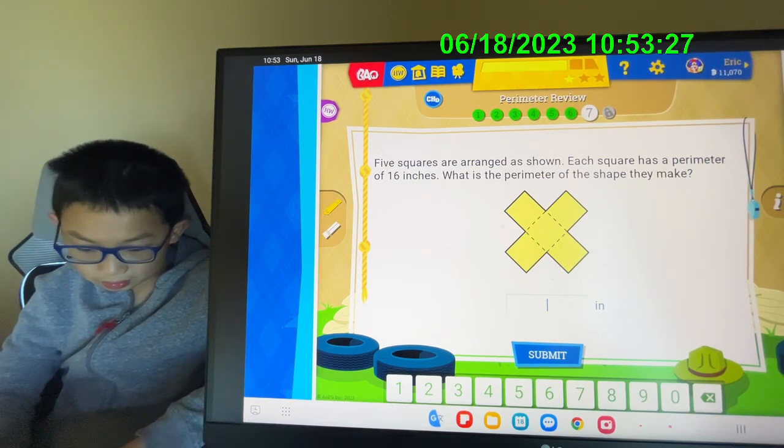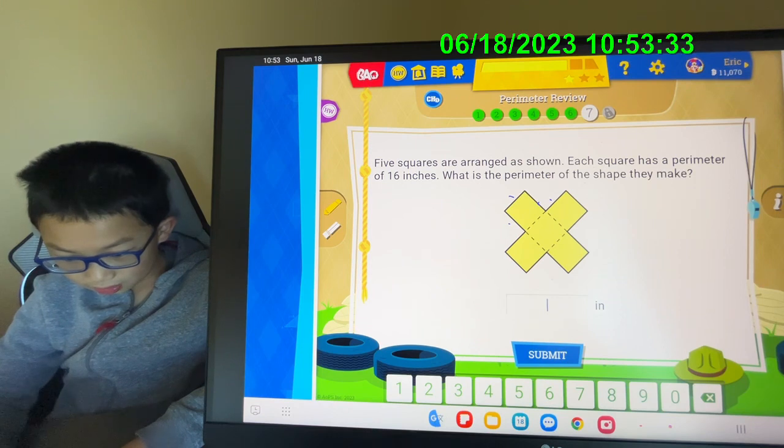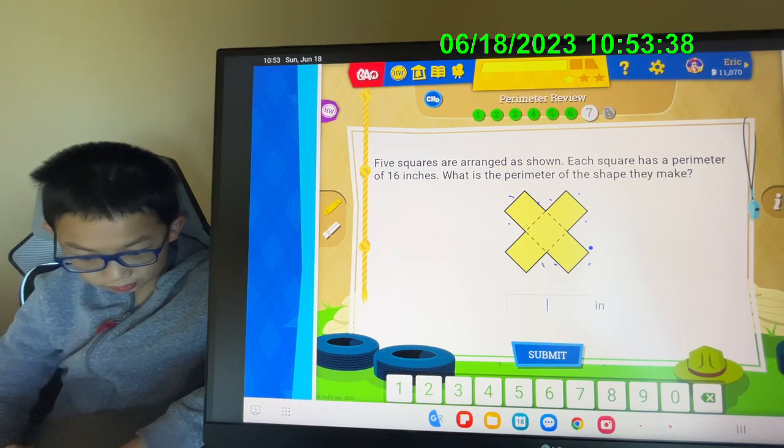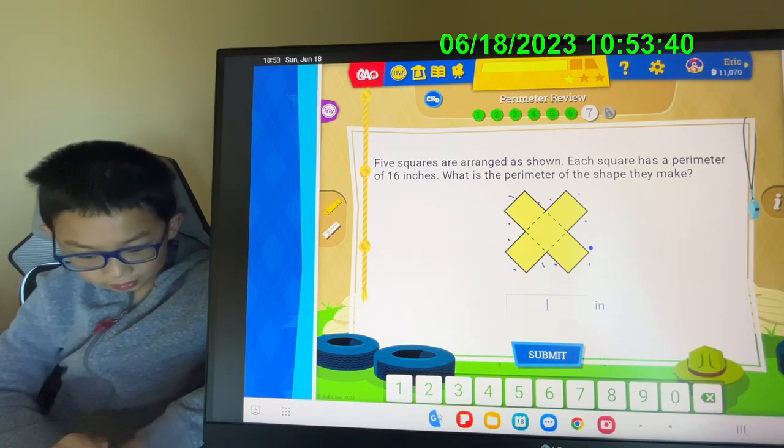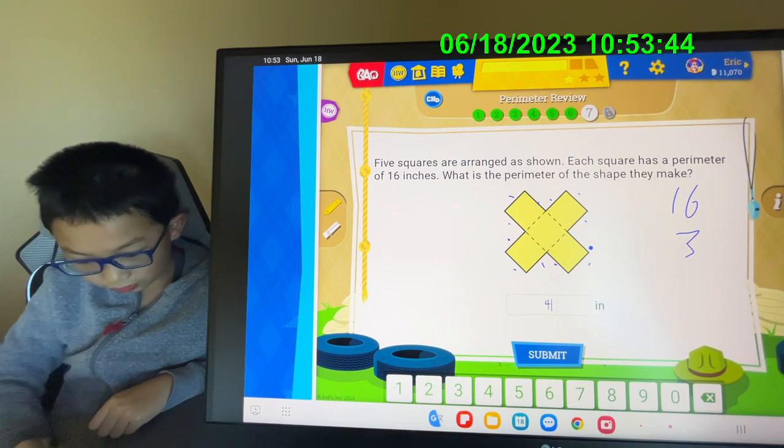For example, this has 1, 2, 3, 4 sides. That equals 16 inches. This has another 1, 2, 3, 4 sides. This one also has 1, 2, 3, 4 sides. So it's 16 times 3 which equals 48.